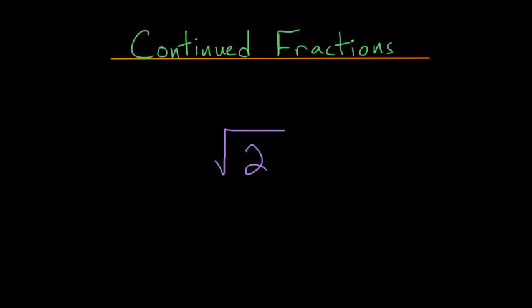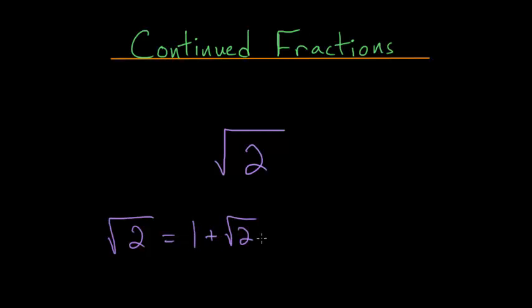In this video, let's take a look at the continued fraction of the square root of 2. To start this, let's write the square root of 2 as being equal to 1 plus the square root of 2 minus 1.